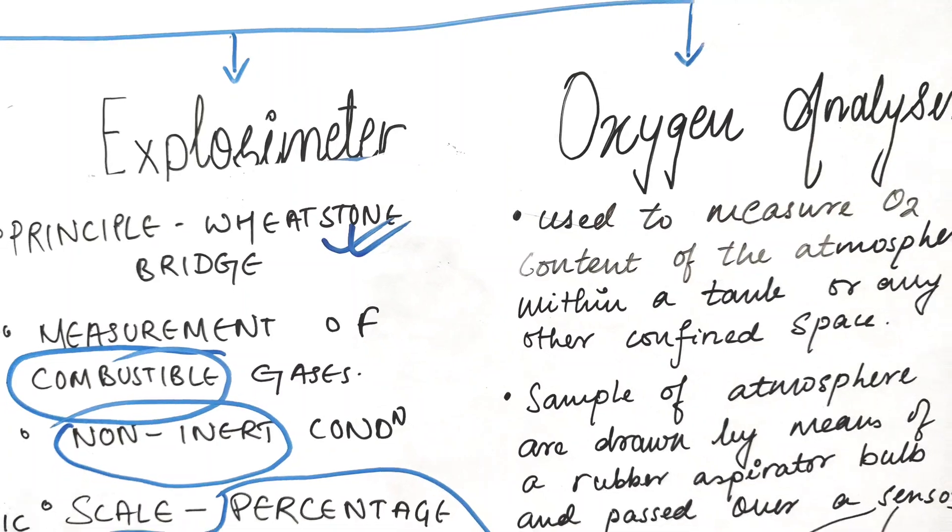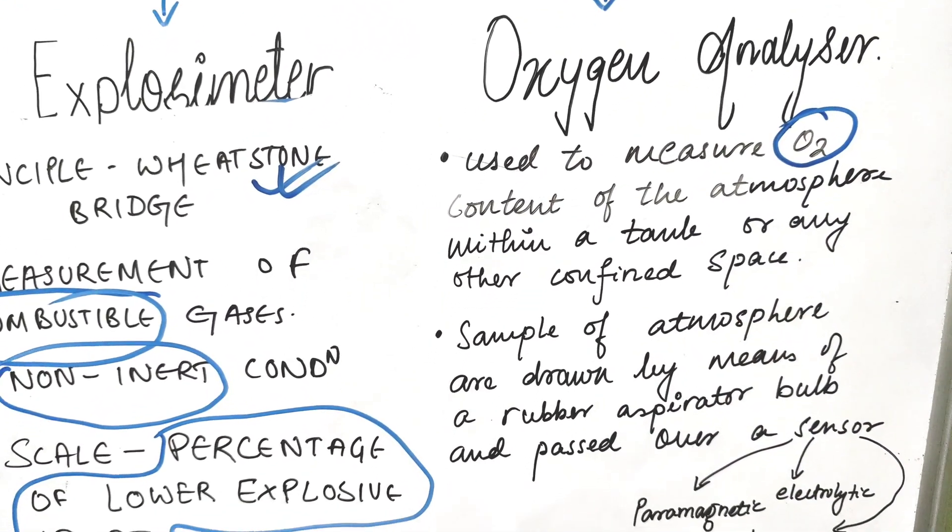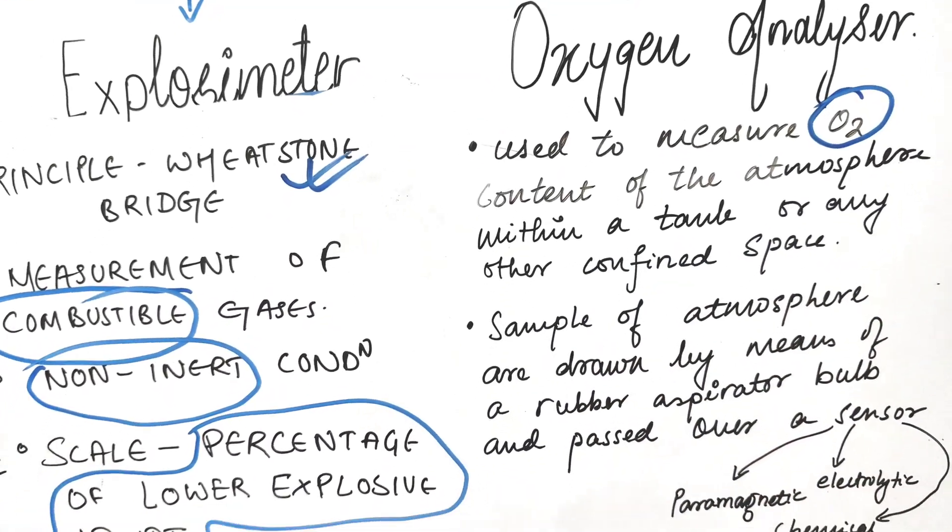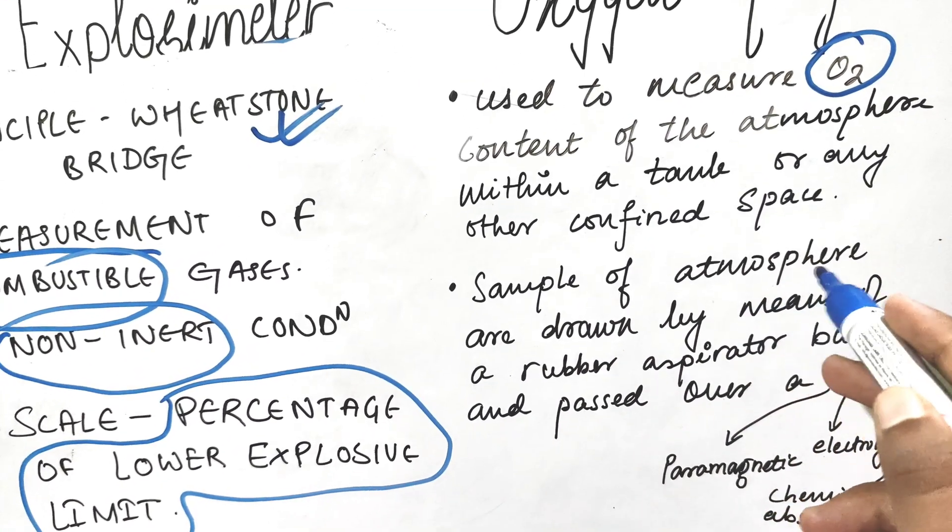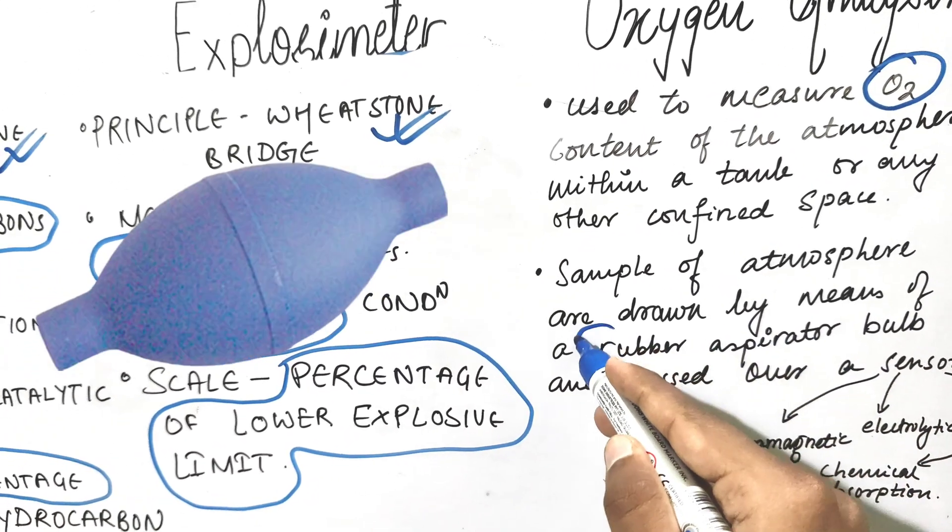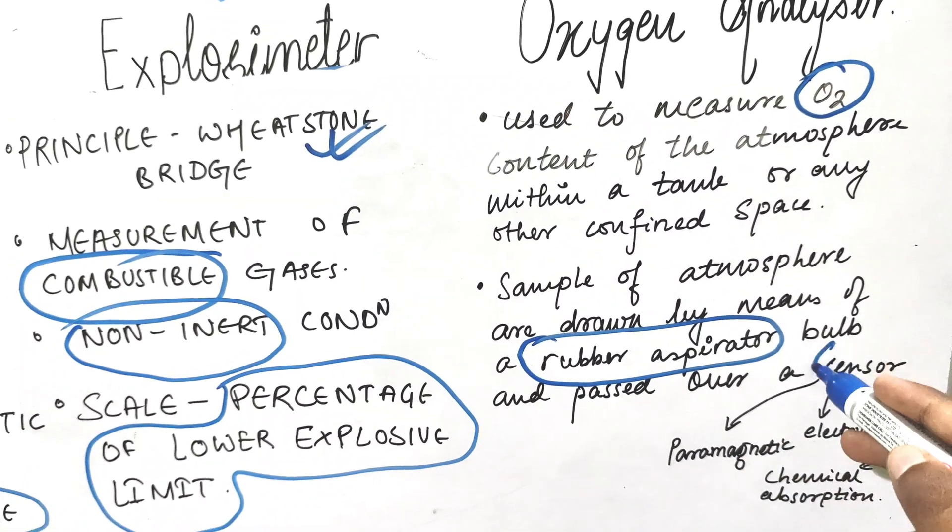Then we have oxygen analyzer. It is used to measure oxygen content of the atmosphere within the tank or any confined space. The sample of atmosphere is drawn by means of a rubber aspirator bulb and is passed over a sensor.